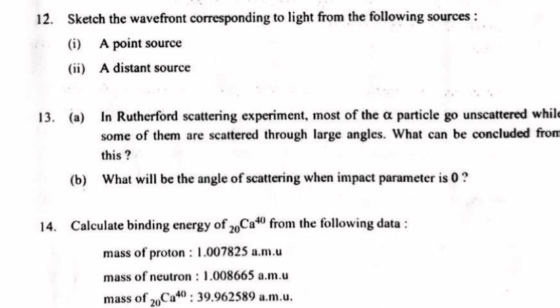Question 13 A: In Rutherford's scattering experiment, most of the alpha particles go unscattered while some are scattered through large angles. What can be concluded from this? B. What will be the angle of scattering when the impact parameter is zero? Answer A: Mass of the atom is concentrated in a small volume called the nucleus, and most of the atom is empty space. Answer B: 180 degrees.